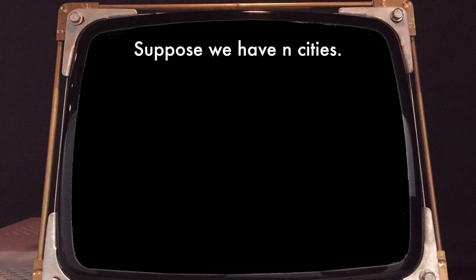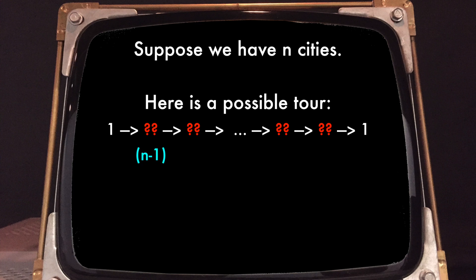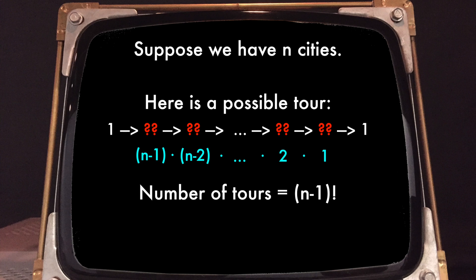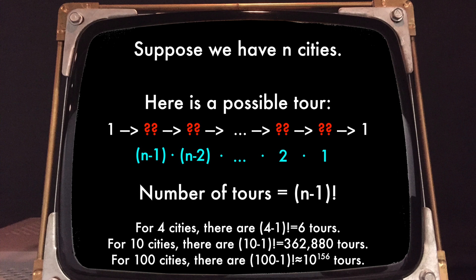Suppose we now have n cities. Instead of giving them names like Lausanne or Zurich, let's simply call them with numbers from 1 to n, and assume, without loss of generality, that our tour starts at city 1. The number of possible tours of n cities is then the number of orderings of the other n−1 numbers. There are n−1 possible choices for the second city to visit, n−2 for the third city, and so on. The total number of possible tours is then the product of numbers 1 to n−1, which is commonly known as (n−1)!, also known as n−1 factorial. Now, 4−1 factorial is 3 factorial, which is 6, which is small. But 10−1 factorial is already around 300,000, while 100−1 factorial is way larger than the number of particles in the universe. This is if you test all possible tours, which is also known as brute force.